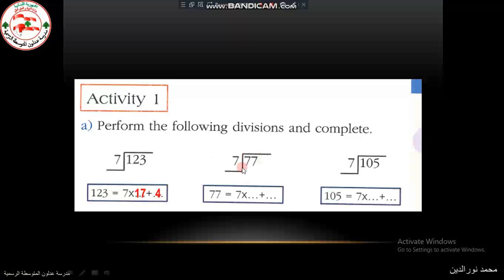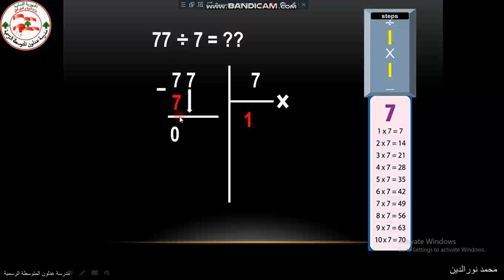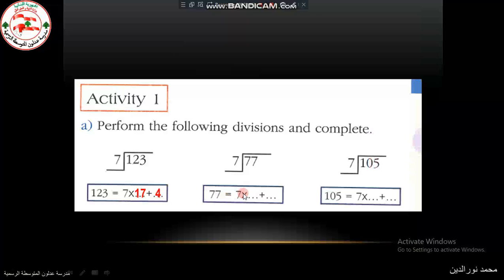Then we have to divide 77 by 7. 77 divided by 7. We start the division operation from the left. 7 divided by 7 is 1. 1 times 7 is 7. Minus 7 is 0. Then we drop down the 7. And then 1 times 7 is 7. 7 minus 7 is 0. Here the quotient is 11 and the remainder is 0. So we put quotient 11, remainder 0.